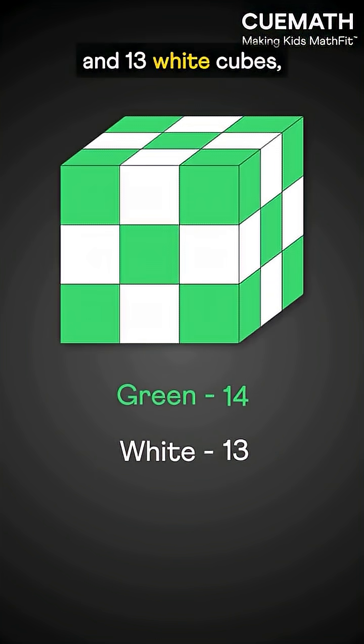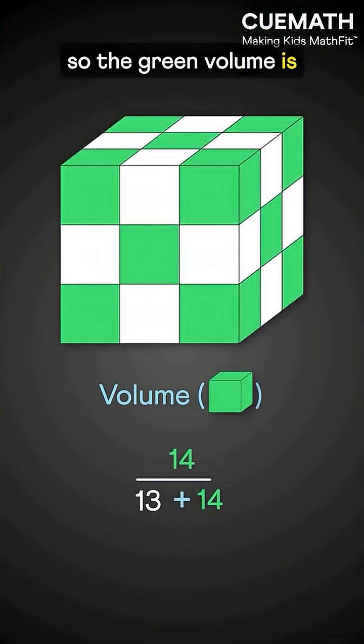there are 14 green and 13 white cubes, so the green volume is 14 out of 27, or 51.8%.